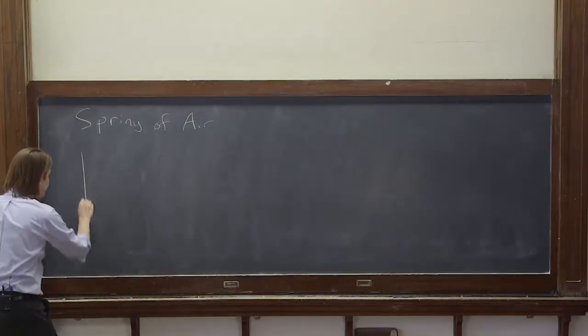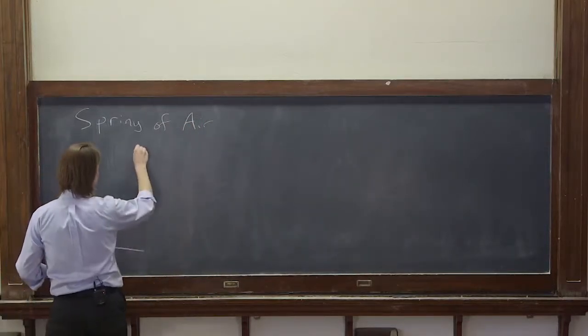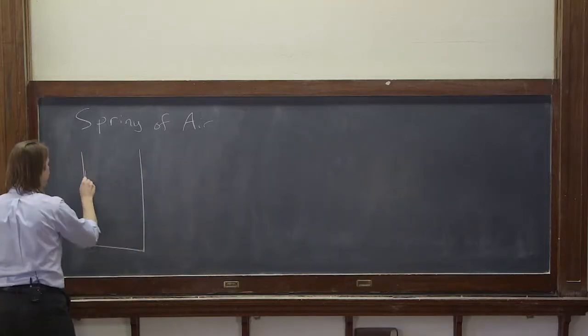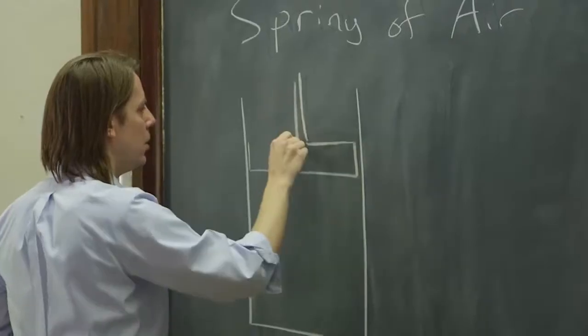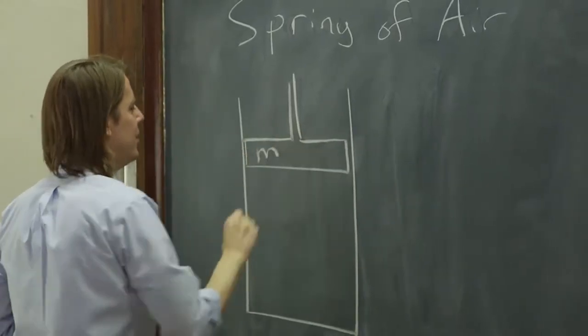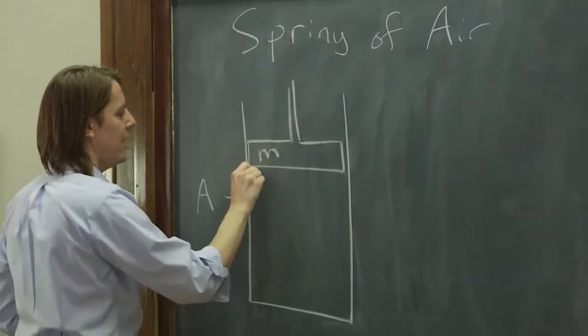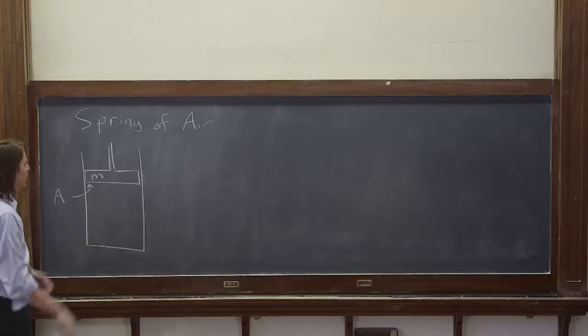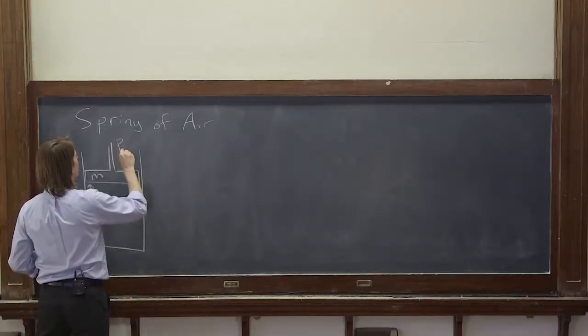Let's imagine a piston pushing into a chamber. The piston has mass m and cross-sectional area A. You can imagine a round piston going into a round chamber. When we think about the forces, we're going to think about the pressure of the air.